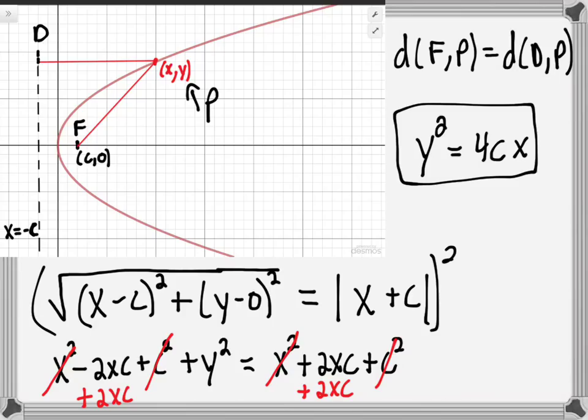So there is the derivation of the formula for a horizontal parabola. The process is exactly the same for a vertical parabola, except you'll get x² = 4cy. That's why we divide the coefficient by 4 to get the actual focal length.